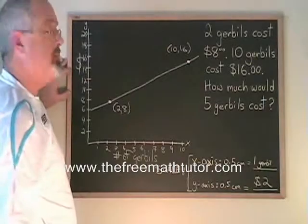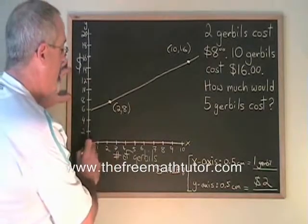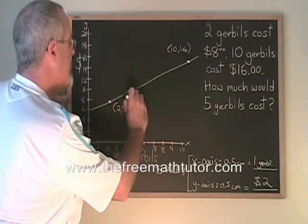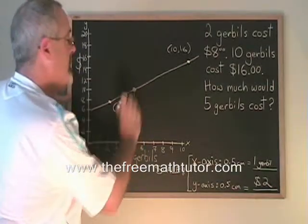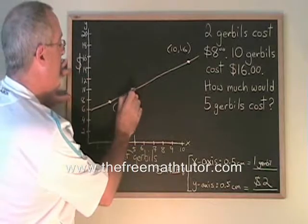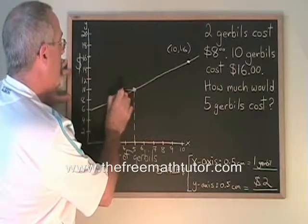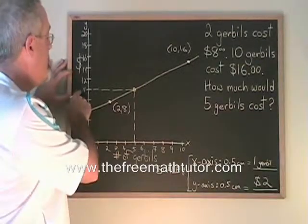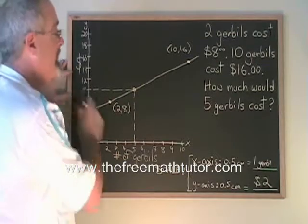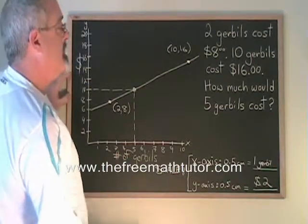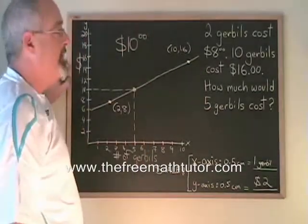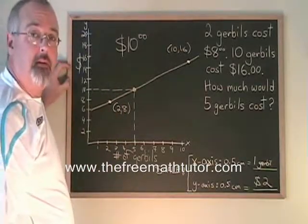How much would 5 gerbils cost? We find 5 gerbils along the x-axis. Draw a dotted line straight up until I hit my line. Put a dot. And then, from that dot, draw a dotted line straight across until I hit my other axis. That's the answer to my question: 10. So, the answer to the question is that 5 gerbils should cost $10. Give the answer with the unit of measure and you're finished.